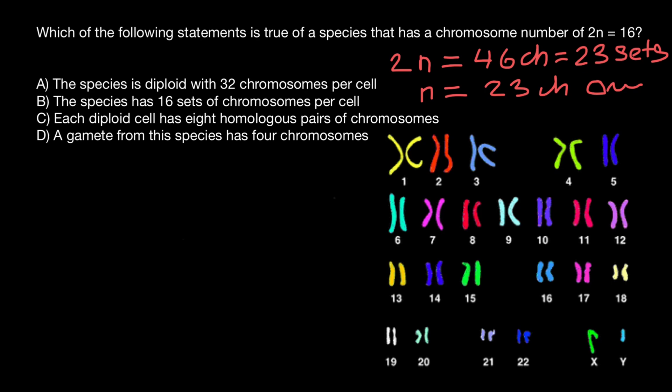Now let's return to our problem. And here is what we expect to see if 2N equals 16. So 16 here stands for the number of chromosomes. And as you see, this is going to be eight pairs of chromosomes.